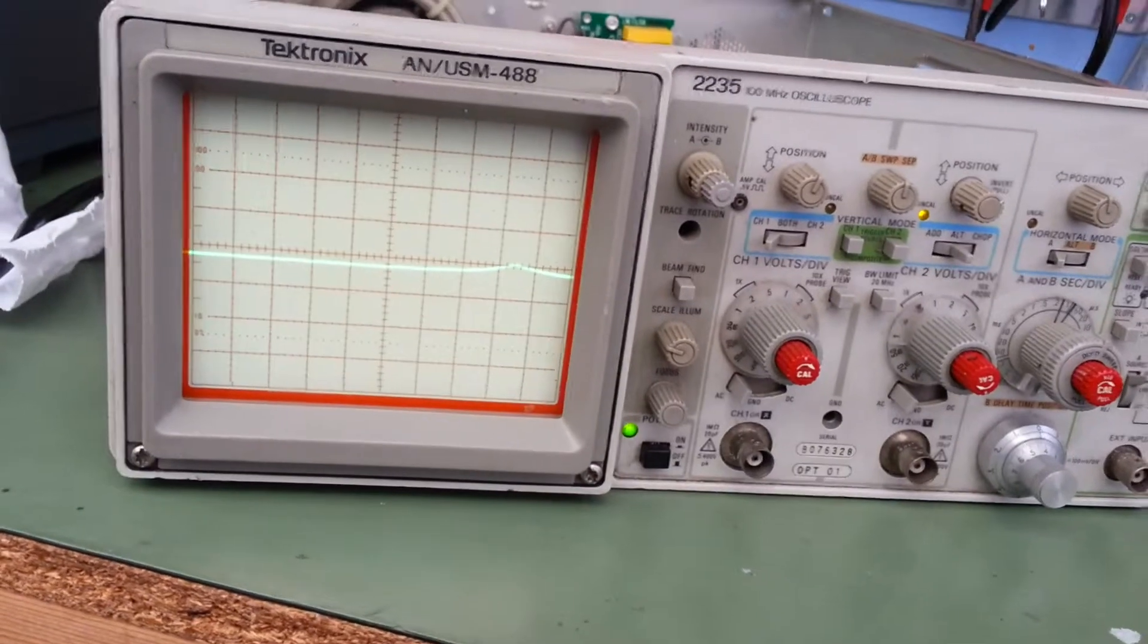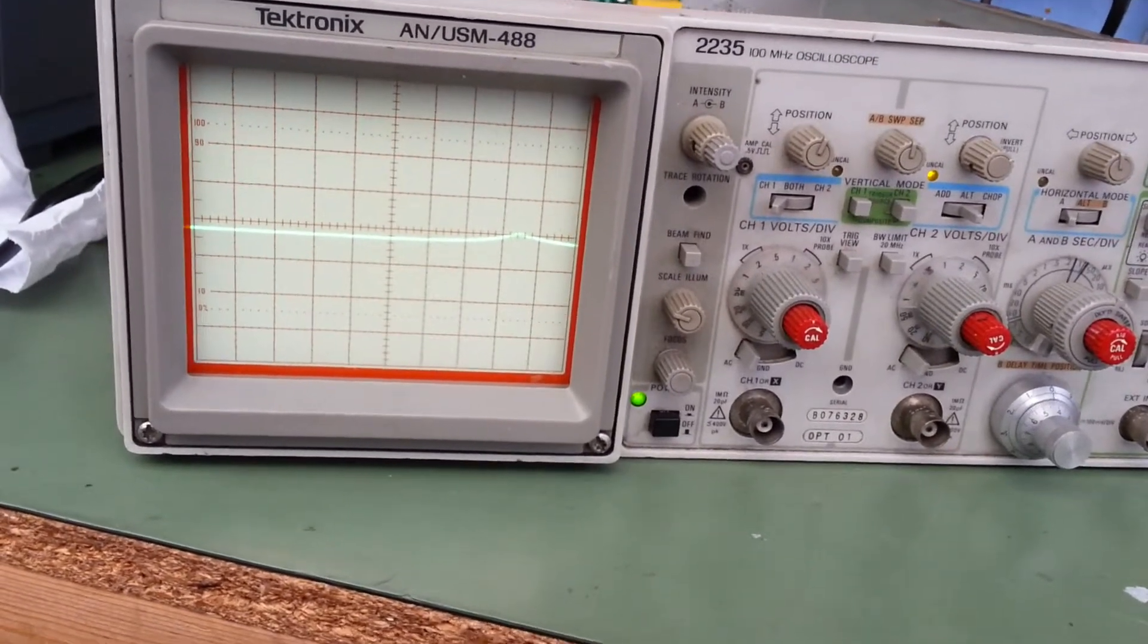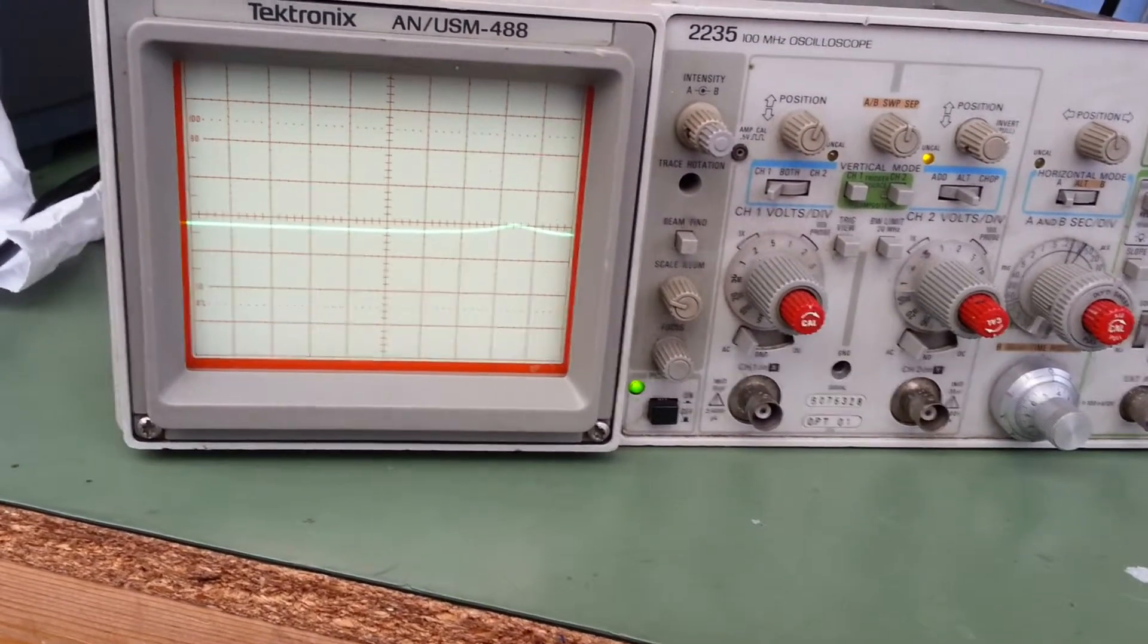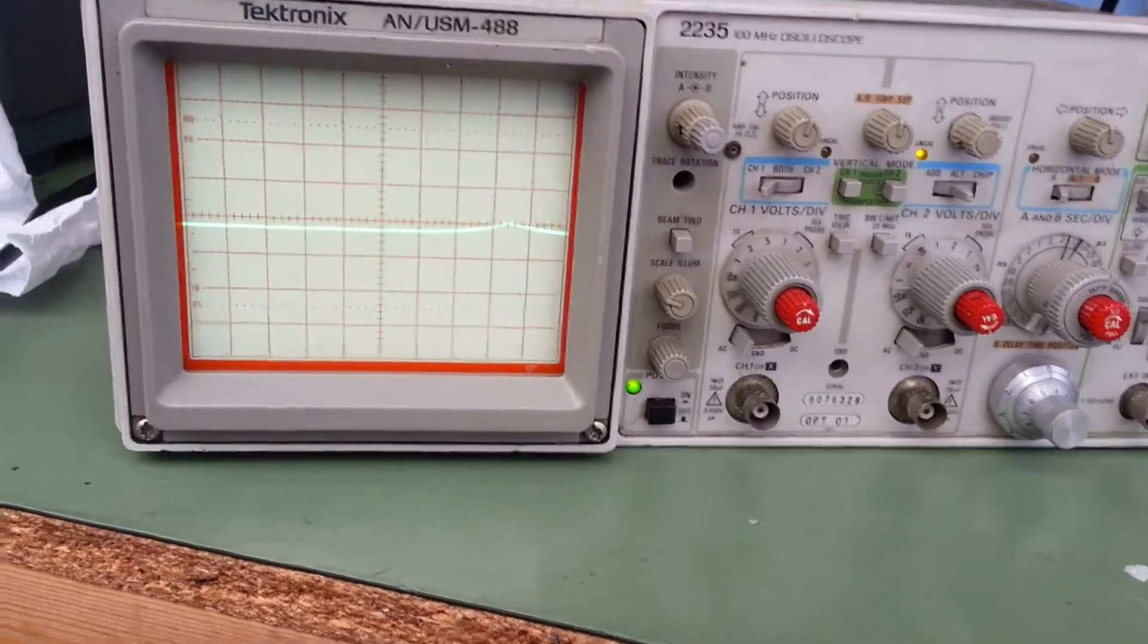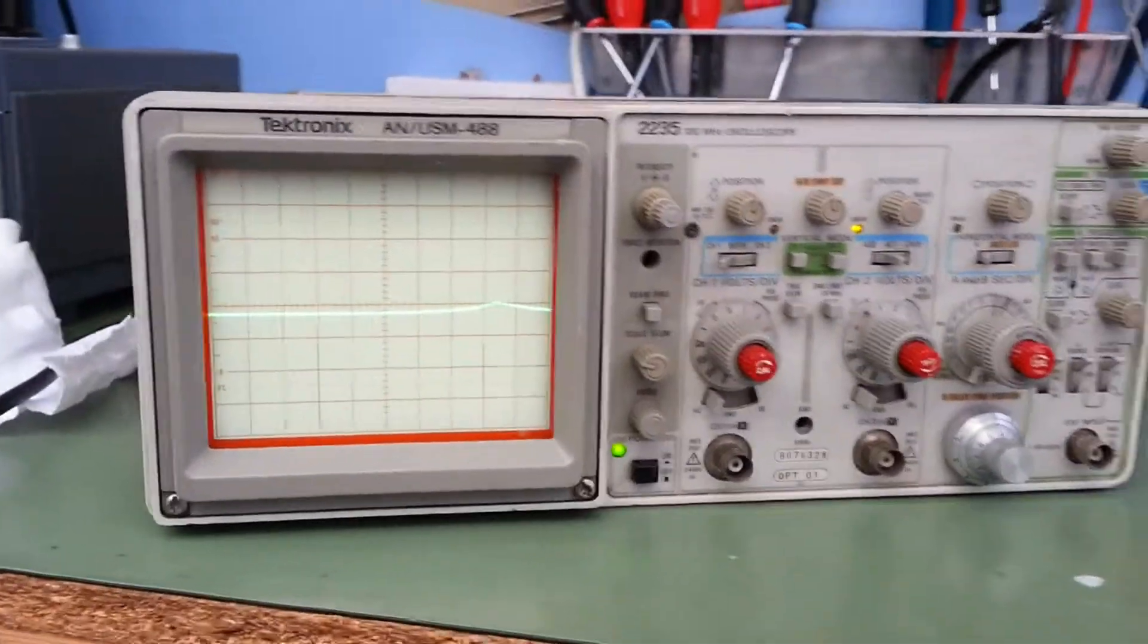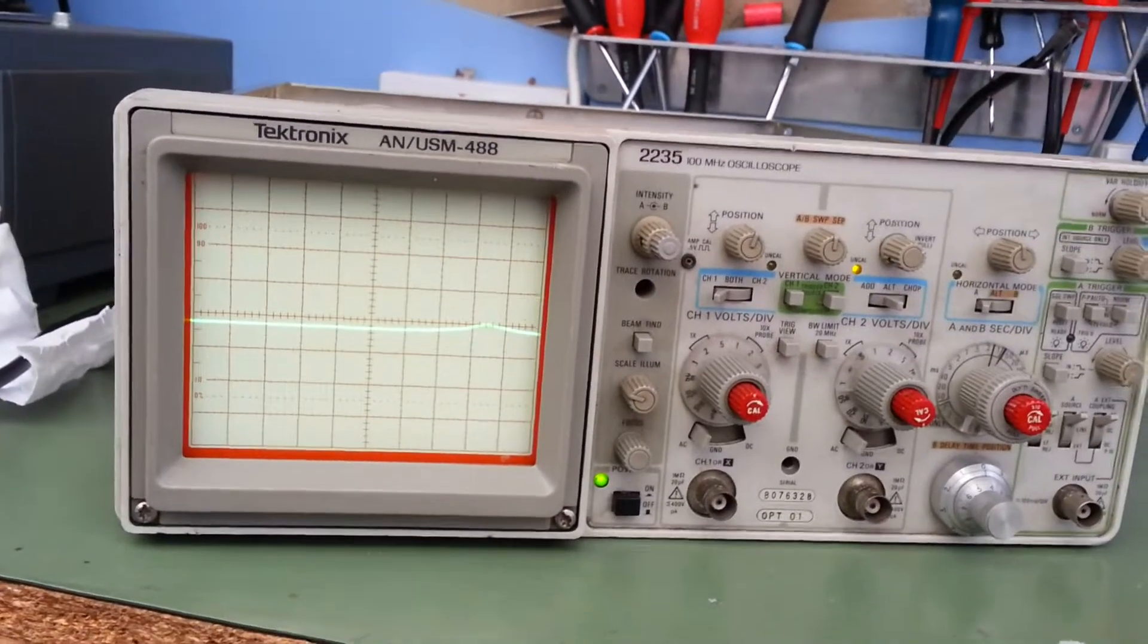Now there's nothing on the back of the unit to say what voltage it is. So at the moment I'm assuming it is 115 volts. It's working fine on 115 volts. All the displays are bright and everything.